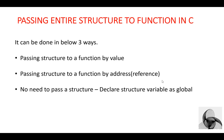There are three ways to pass an entire structure to a function in C. First, passing structure to a function by value. Second, passing structure to a function by address or reference. And the third way is no need to pass a structure — directly declare the structure variable as global.